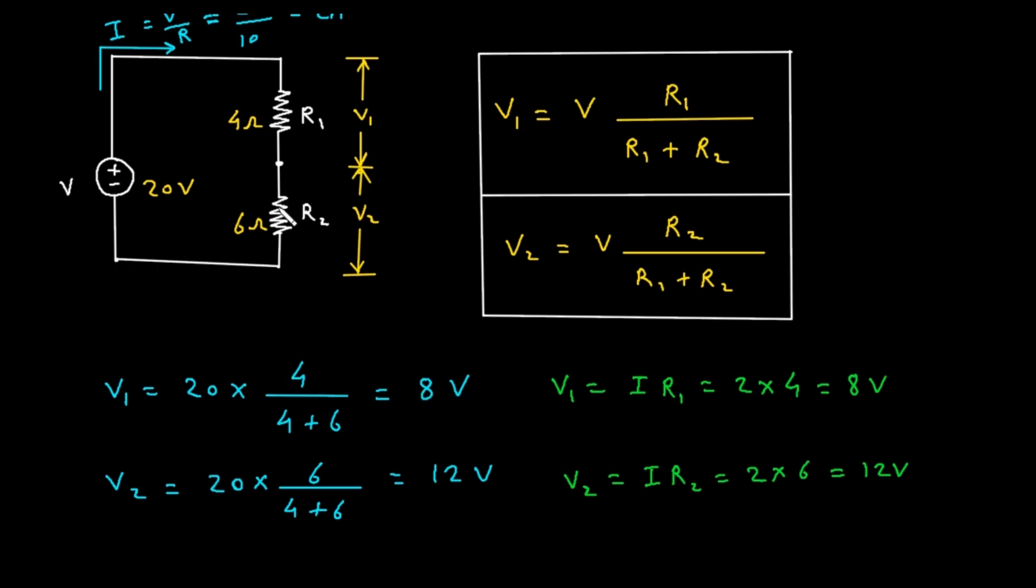Now similarly, if we want to find voltage across resistor R2, which is V2, V2 is equal to supplied voltage, which is 20, into R2, which is the self-resistance, so 6 divided by 4 plus 6. If we solve this, we get 12 volt.